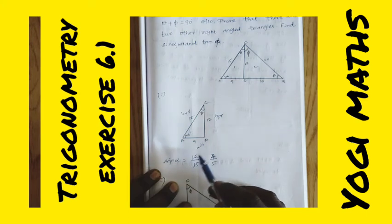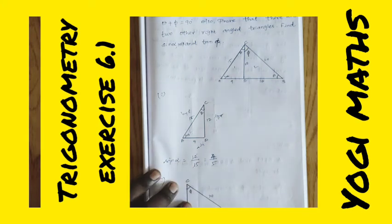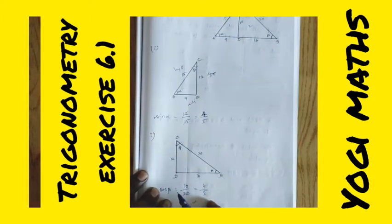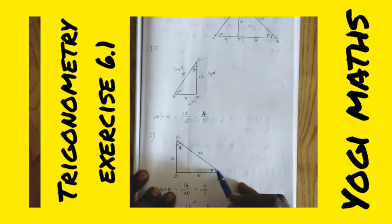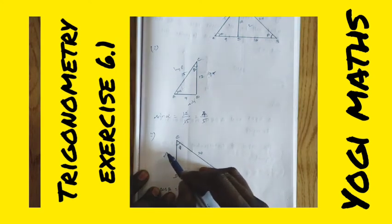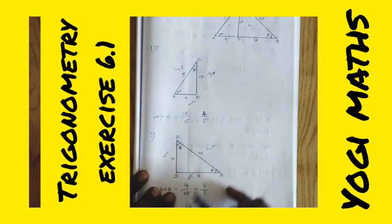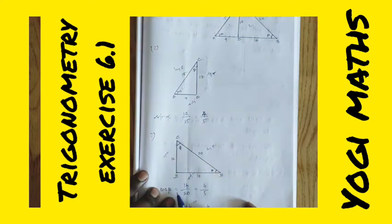Next, in the second triangle, we need to find cos beta. This one is the opposite side, this is the hypotenuse, and this is the adjacent side. For cos beta, the formula is adjacent by hypotenuse.